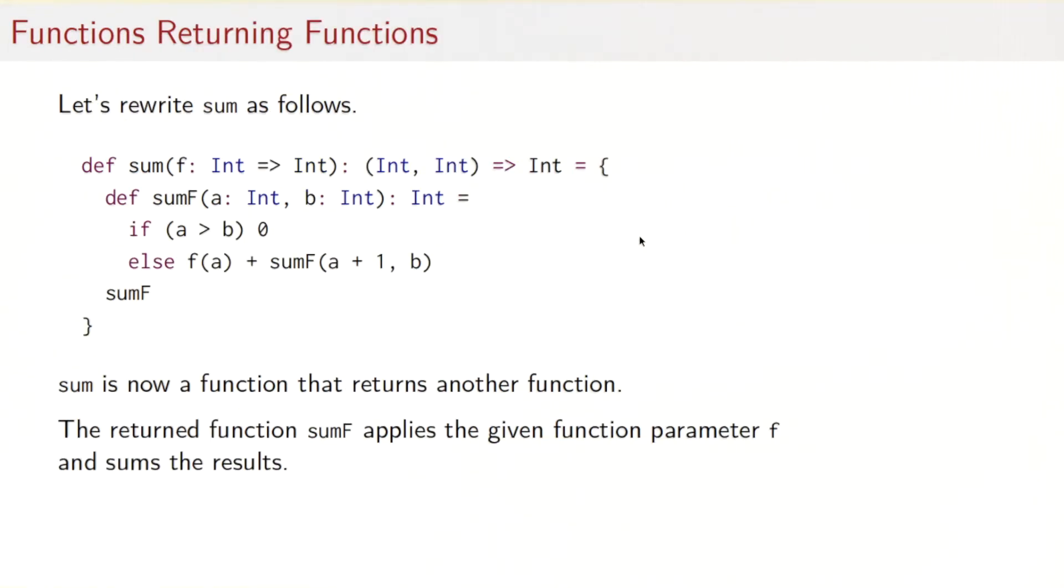To see how that could be done, let's rewrite the sum function as follows. That sum function now takes only a single parameter f of type int to int as before, and it returns a function as its result, indicated by this function type here. So how can it return a function as a result?